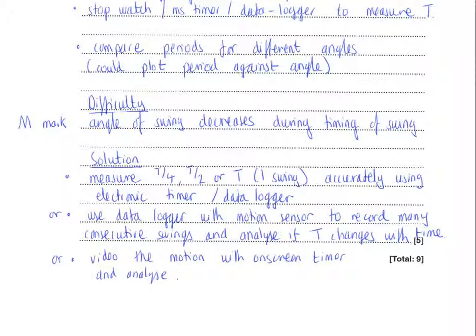There are two other options, though, slightly different approaches. If you had a data logger with a motion sensor, you could just let the pendulum keep swinging, and you could then study the data to see if the time period is changing as the experiment progresses. A similar idea could be to video the motion. It's important, however, to say that the video must record time values, otherwise you won't be able to analyse what's going on.